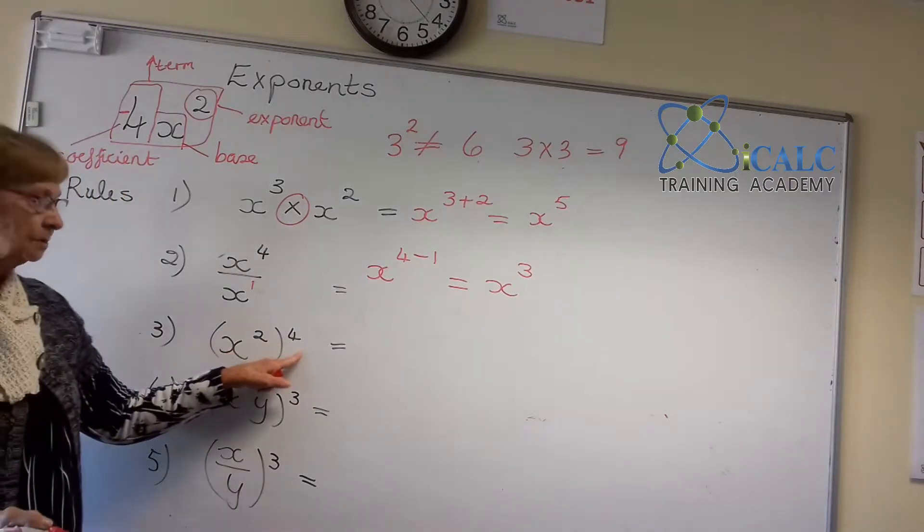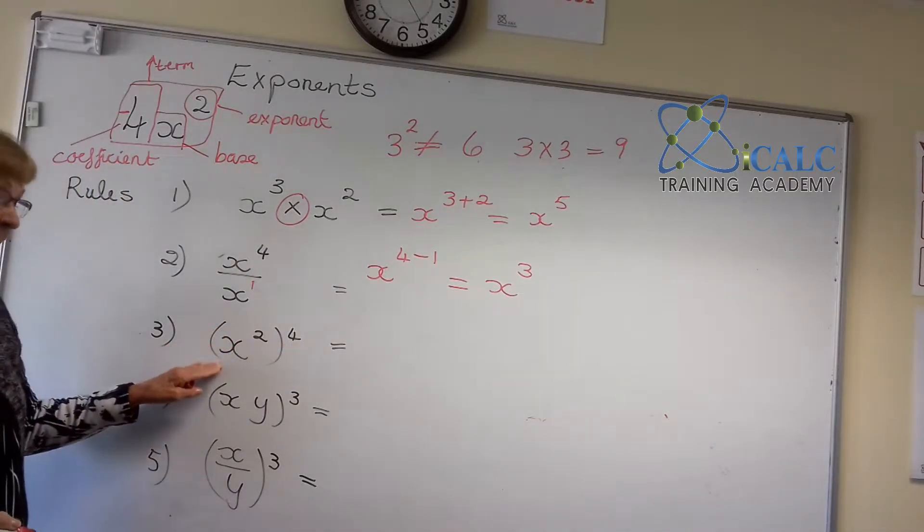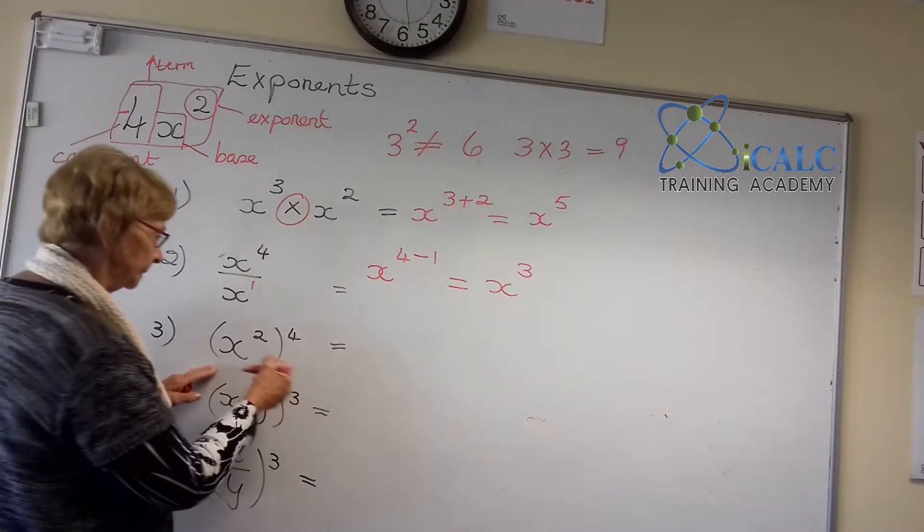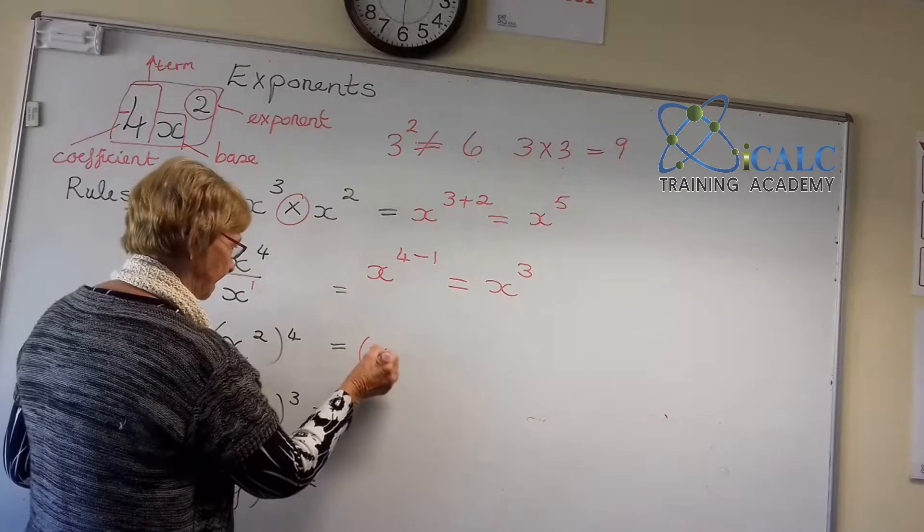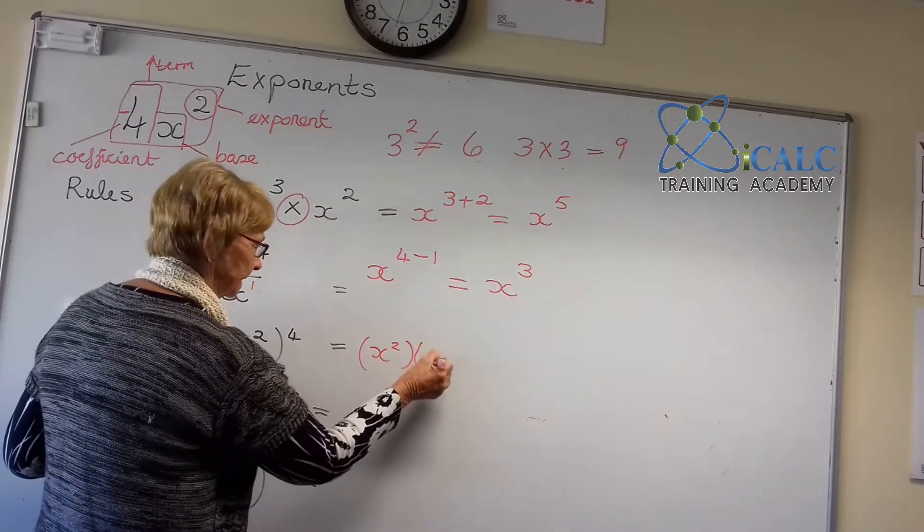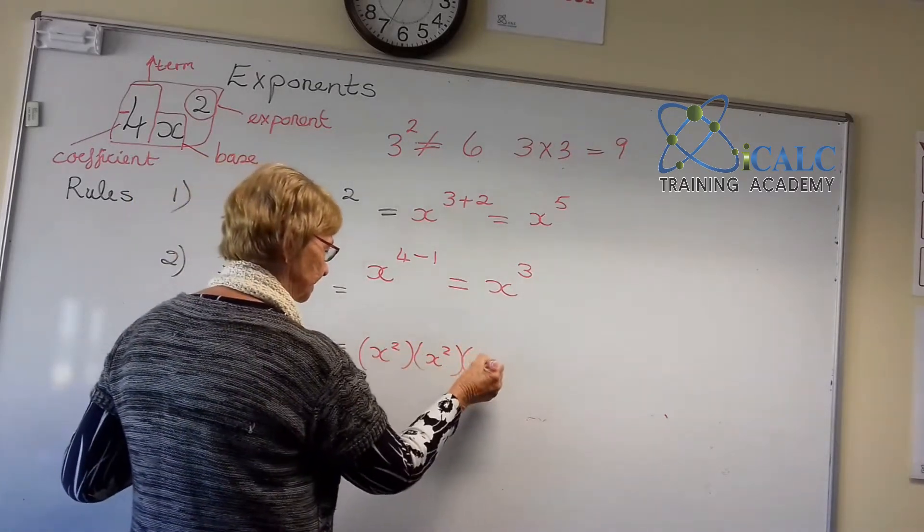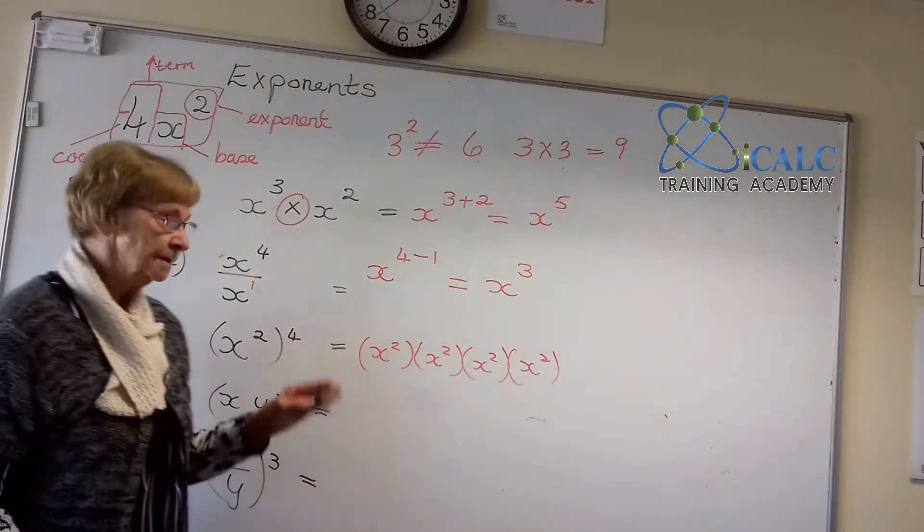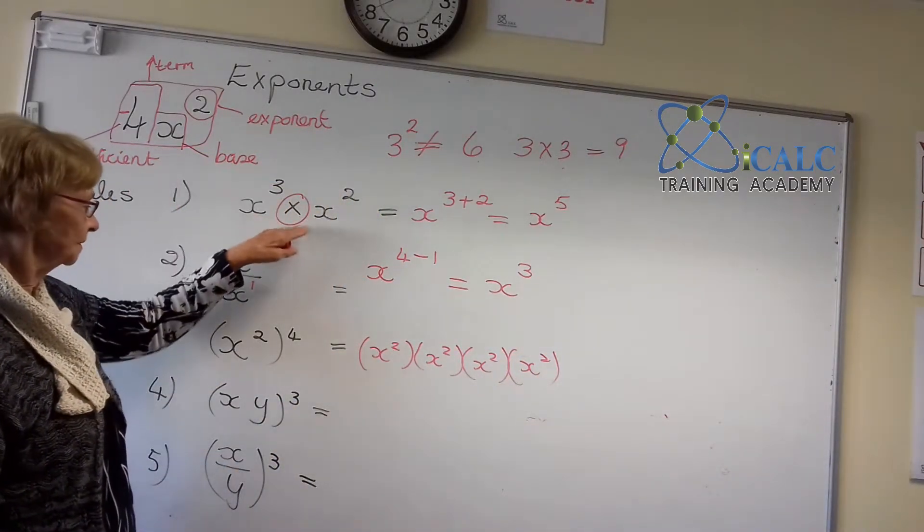Raising a power to a power, then we are going to multiply. Why do we multiply? We multiply because this really means x squared times x squared times x squared times x squared four times. So now the rule, going back to the first rule, applies.